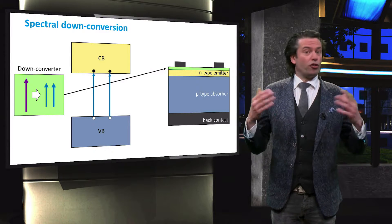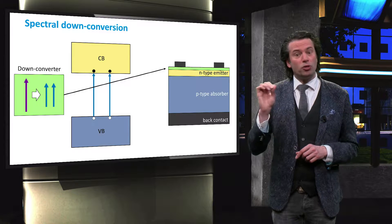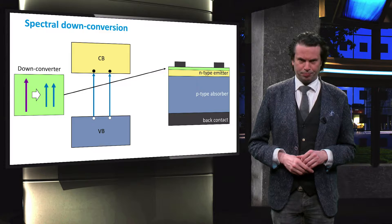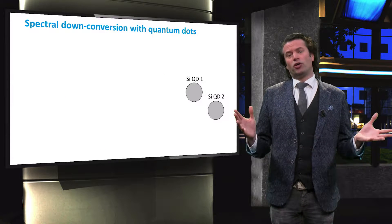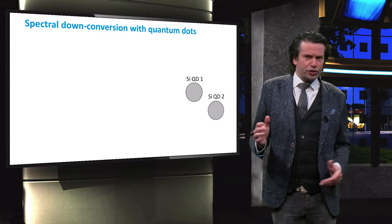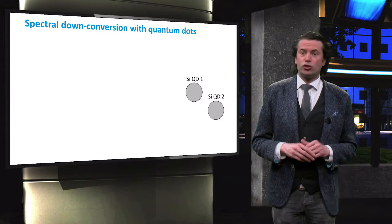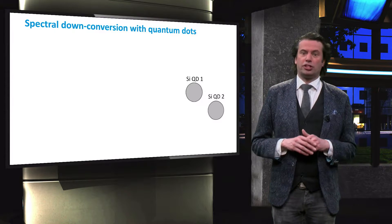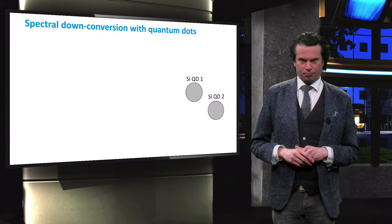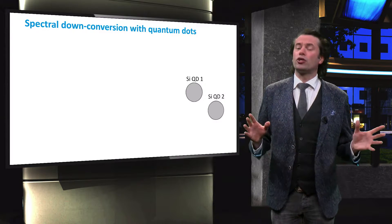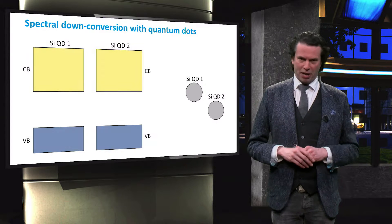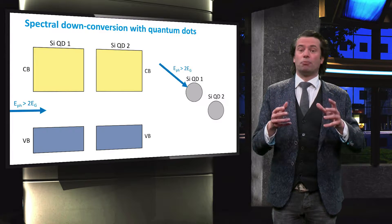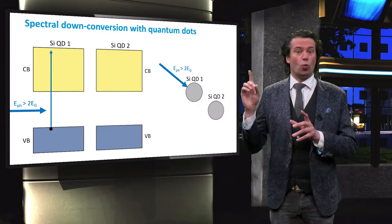Just as with other third generation concepts, quantum dots can be used for spectral downconversion. If quantum dots were to be used for downconversion, an assembly of nanoparticles would be embedded in a host material, in very close proximity to one another. The figure shows two silicon quantum dots and their respective band diagrams. A high energy photon is absorbed by quantum dot 1,